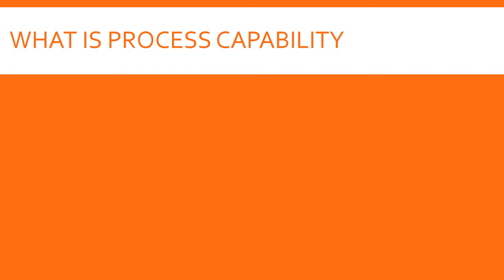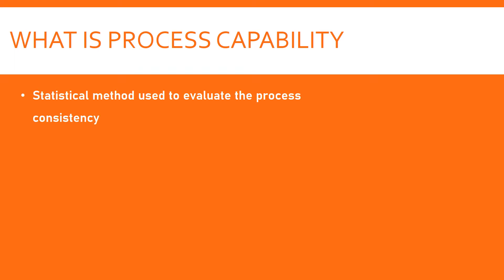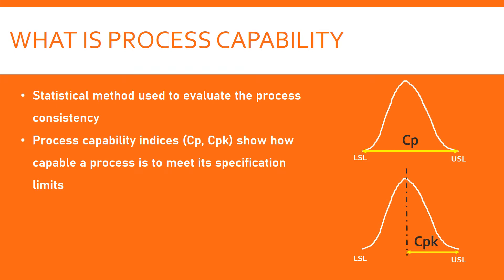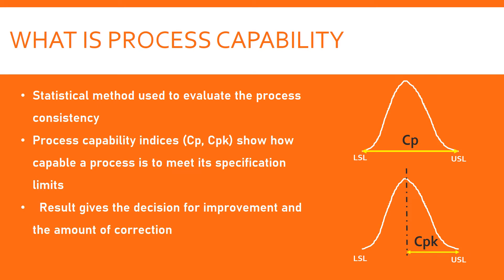So what is process capability? It is a statistical method to evaluate process consistency. There are two indices: CP and CPK. They show how capable the process is to meet its specification limits. CP talks about the spread — the range of outputs — and CPK talks about the centering of the process relative to the specification limit. Based on the results, decisions can be made for improvement or correction using CP and CPK values.